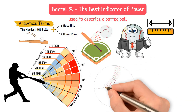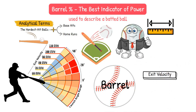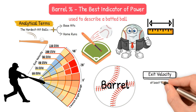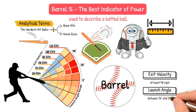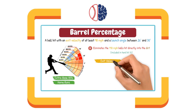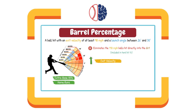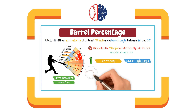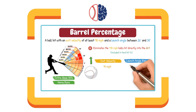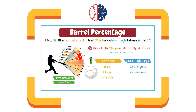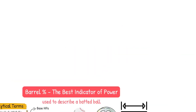For a ball to be classified as a barrel, it must have an exit velocity of at least 98 miles per hour and a launch angle between 15 and 30 degrees. As that exit velocity number increases, the acceptable launch angle range expands. For example, a 98 mph ball needs to be between 26 and 30 degrees to be a barrel, while a 110 mph ball can be barreled between 8 and 50 degrees.